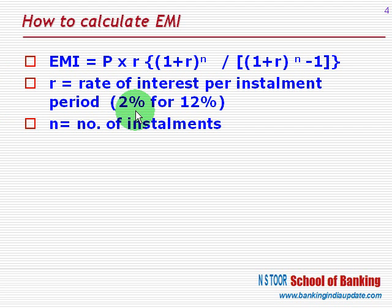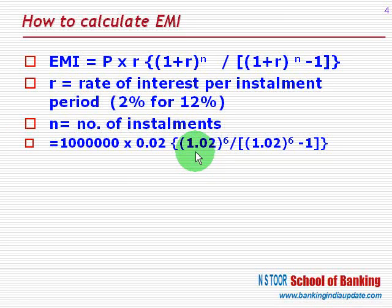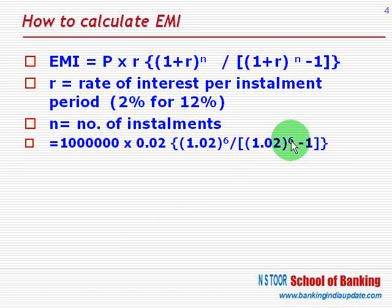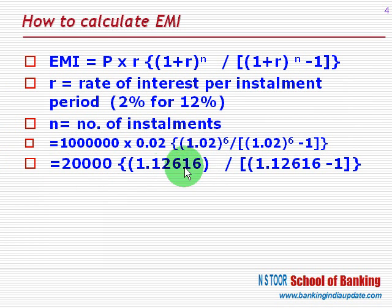Now we substitute the values into the formula. Principal is 10 lakh, rate of interest is 2% expressed as 0.02. So 1 plus r equals 1.02, and 1.02 raised to power 6, divided by 1.02 raised to power 6 minus 1. Simplifying: this portion gives us 20,000; this portion gives the value 1.12616; and this portion gives 1.12616 minus 1.